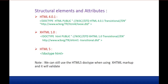Let me explain the first feature: structural elements and attributes. Here you can observe HTML version 4.0.1 — you have something like the doctype HTML public. Apart from this, you can see the first version XHTML, and then HTML5. HTML5 has the doctype HTML. Why do we need a doctype? Doctype specifies what version of HTML you are using in your webpage, so we have to specify the doctype in our HTML page.